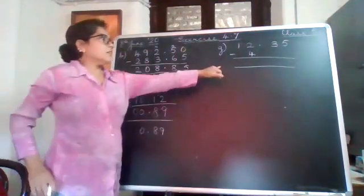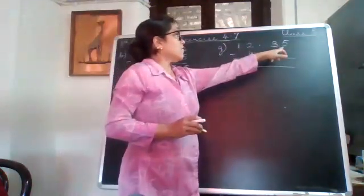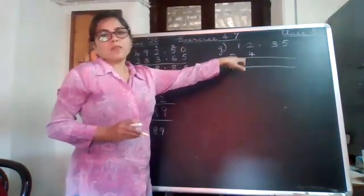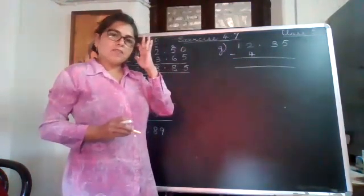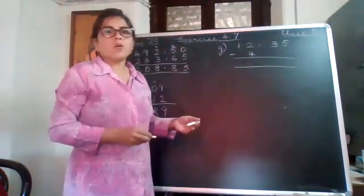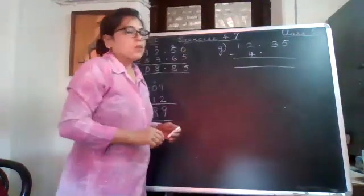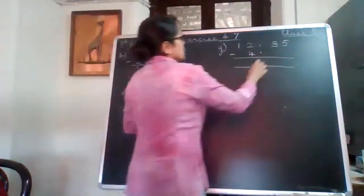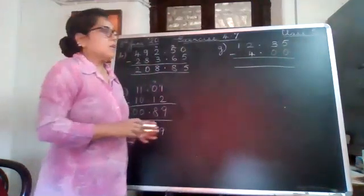Then we go to this one. Now in this question there is 12.35 minus 4. Now why do I write the 4 here? Because it is a whole number, and we know that the whole number always comes before the point. So to make it like decimals, I will insert zeros in the decimal places.